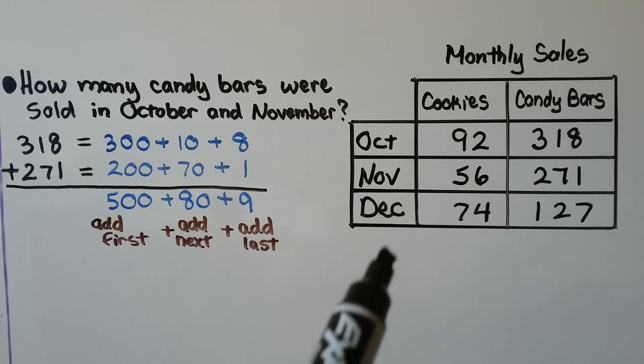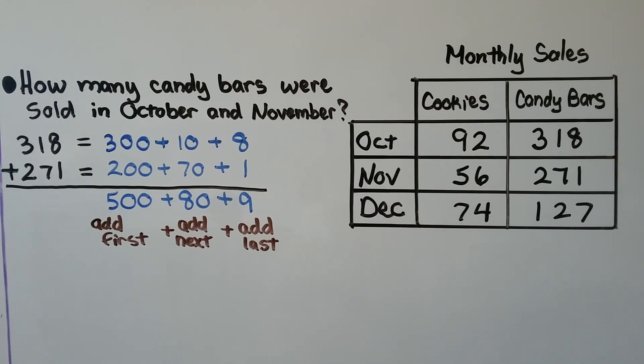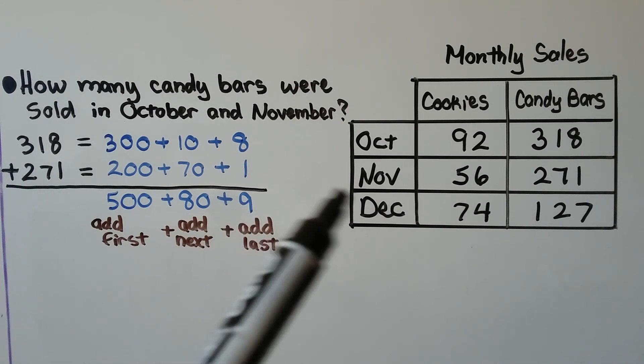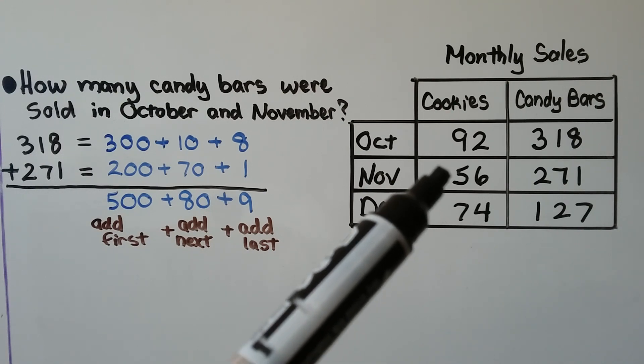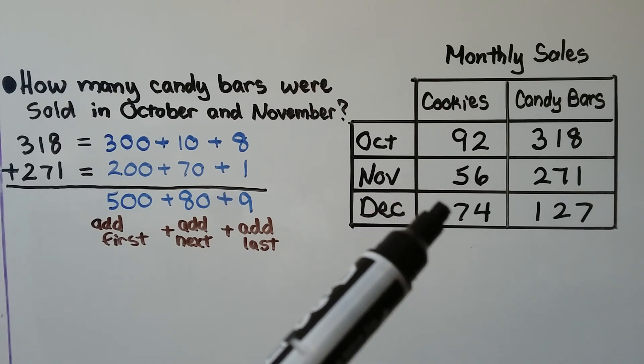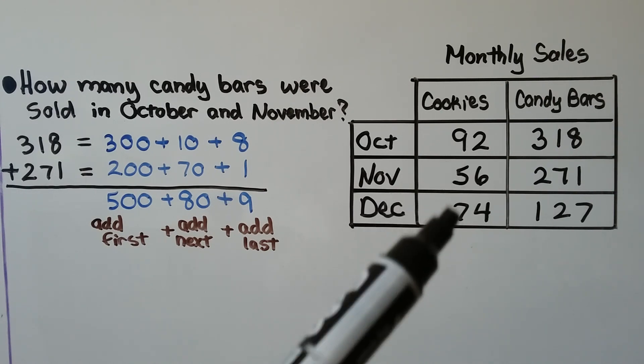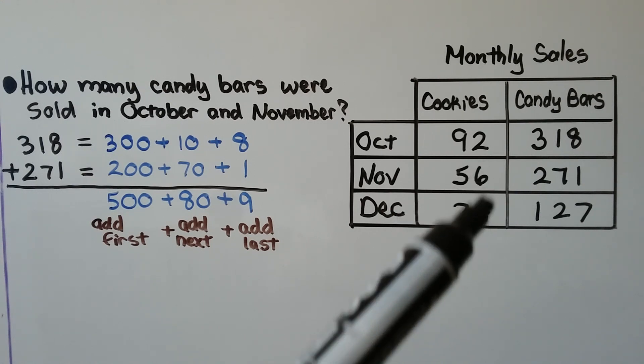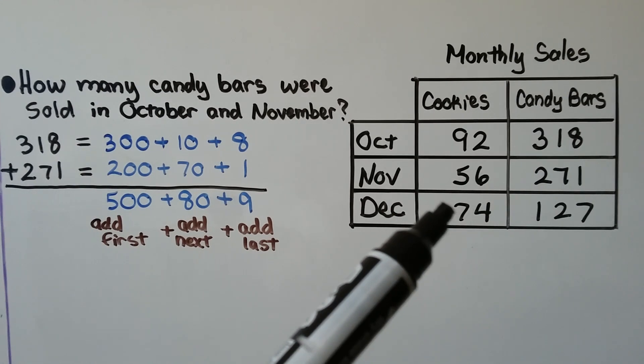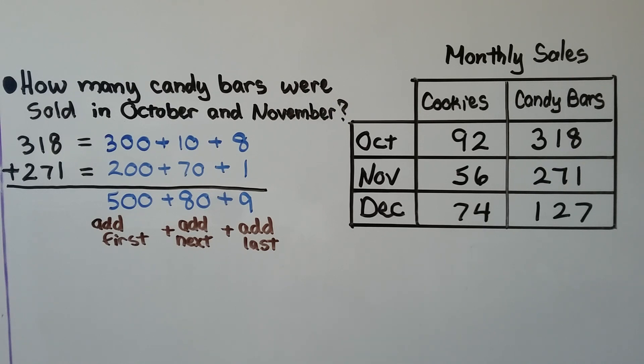Can you try adding some of these numbers in your head starting with the larger place value? Can you add 56 plus 74 in your head? We have 5 and 7 is 12. These are tens. So that's 50 plus 70. That would be 120. 6 plus 4 is 10. So we have 120 plus 10 more. That would be 130.